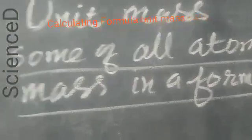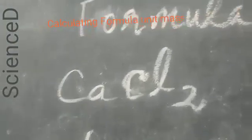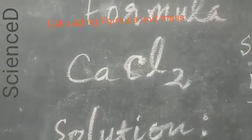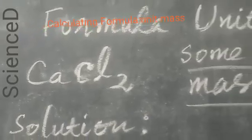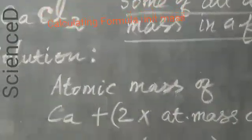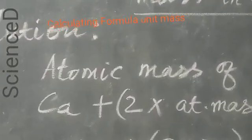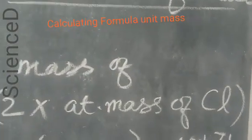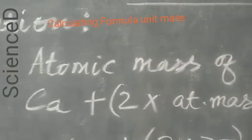Suppose CaCl2, calcium chloride, is a formula. For this we are going to find the solution, that is formula unit mass we are going to calculate. That is atomic mass of Ca plus 2 times atomic mass of Cl. This is what we are going to find.